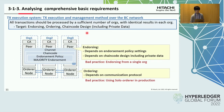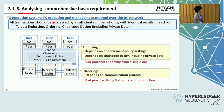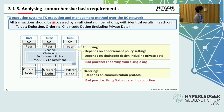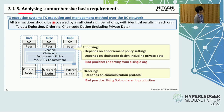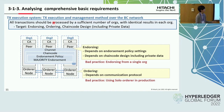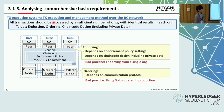The second perspective is transaction execution — that is, execution and management method over the blockchain network. A requirement for this perspective is that all transactions should be processed by a significant number of organizations with identical results in each organization. A fabric-based system should have a proper endorsement policy setting, chain code design including private data, and an ordering communication protocol avoiding single points of trust.